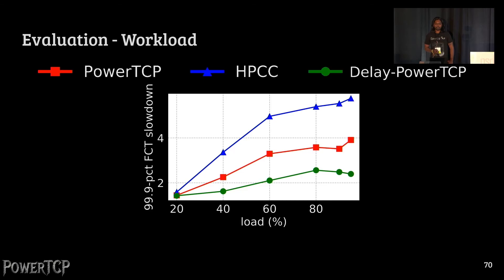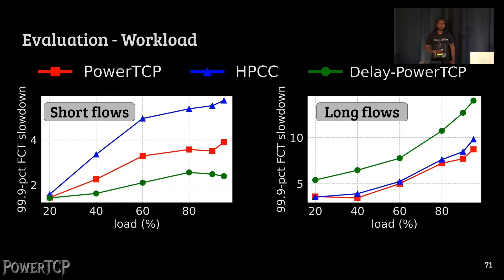The catch here is that when we look at the flow completion times of long flows, the delay version of PowerTCP suffers in terms of flow completion times for long flows. On the other hand, PowerTCP indeed improves upon HPCC even for long flows. This actually shows that PowerTCP is at the sweet spot of this tight tension between throughput hungry long flows and delay sensitive short flows.